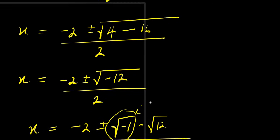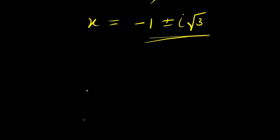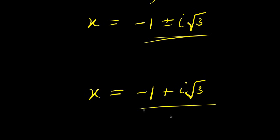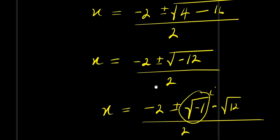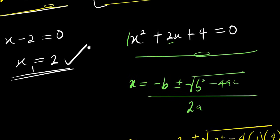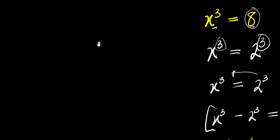Now we have two complex values for x. We have x equals negative 1 plus i root 3, and we also have x equals negative 1 minus i root 3. These are the two complex values and we also have one real value for x which is x equals 2. You can easily check by inserting this real value for x.